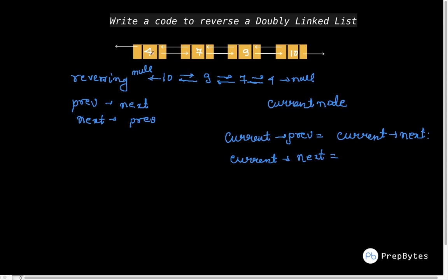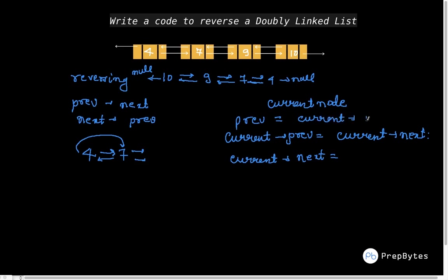But there is a problem: I have already changed current.prev, so I can no longer access the original prev. I need to store the original prev somewhere before making changes. So I introduce a variable 'prev' in which I store the original current.prev before doing anything. Now I can correctly set current.next = prev, which changes that link to point to null.